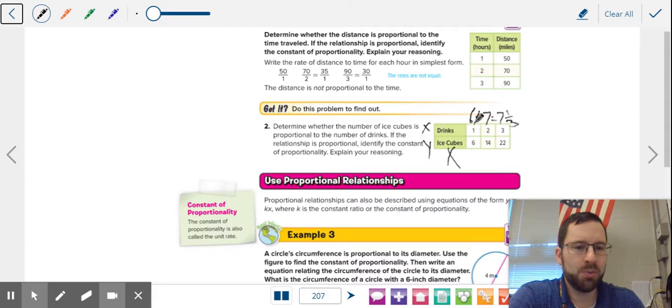So it looks like as you get more drinks, you have to put in more ice cubes for some reason. How do I know it is not proportional? Because the quotients increase. They're going up.